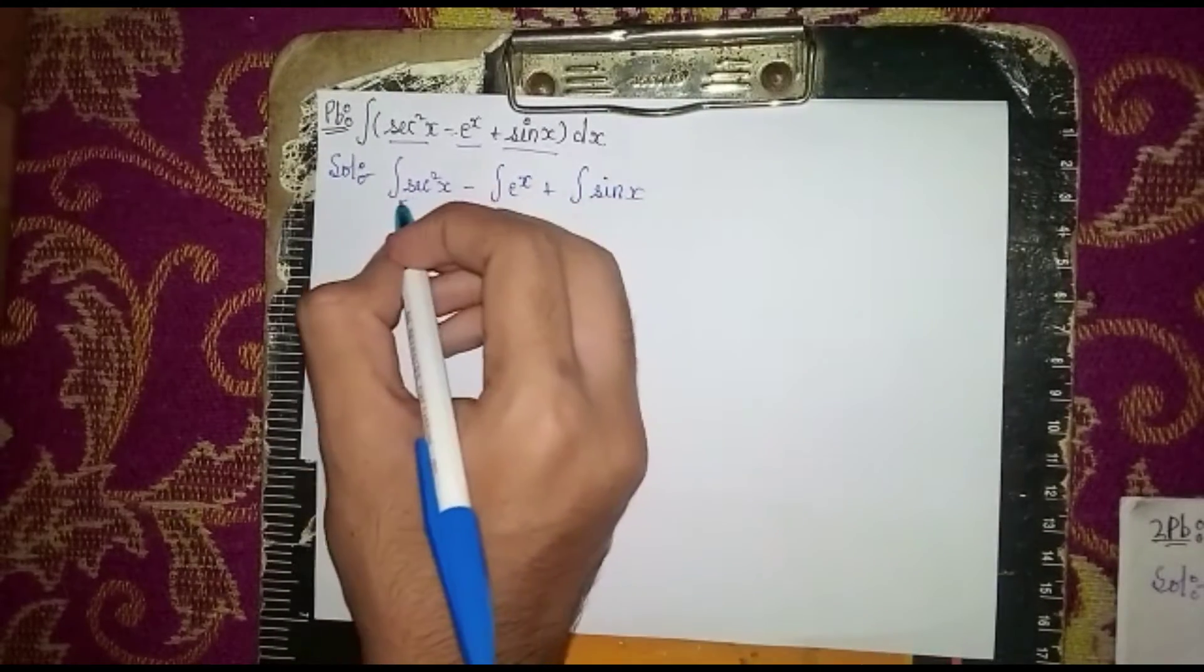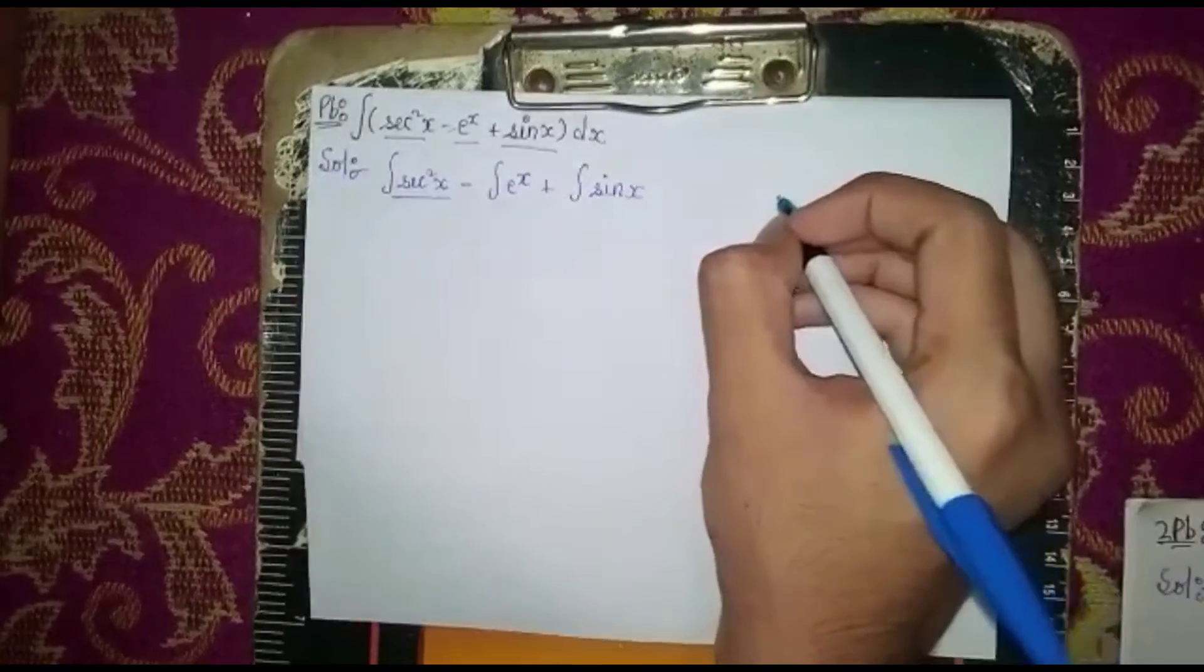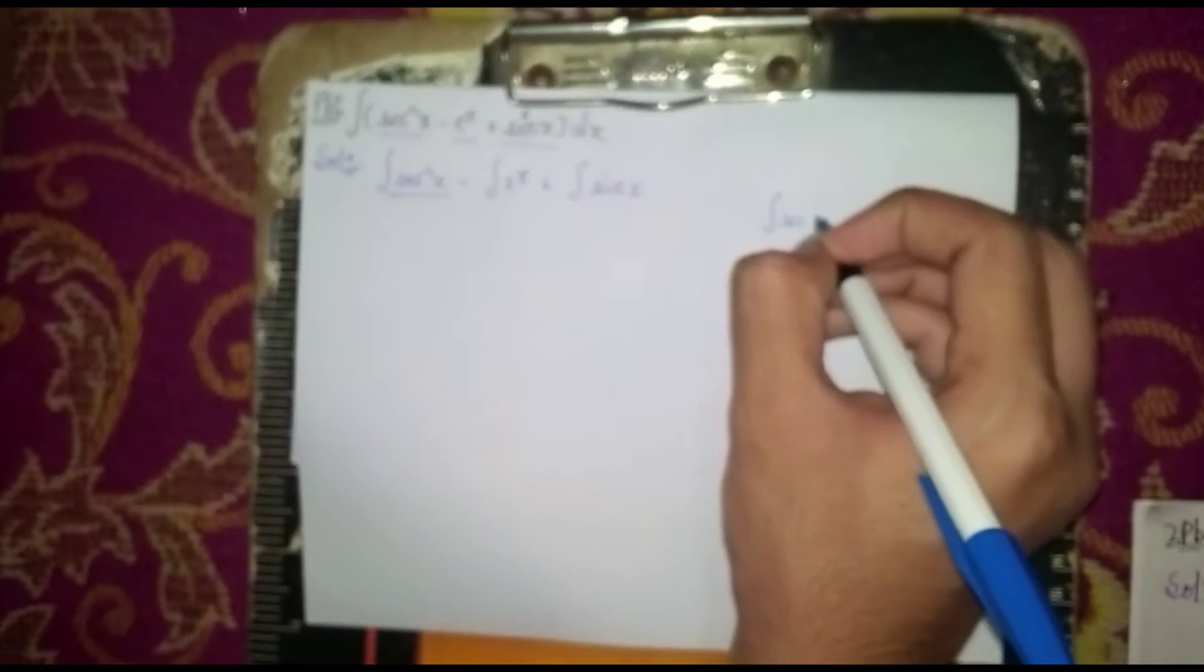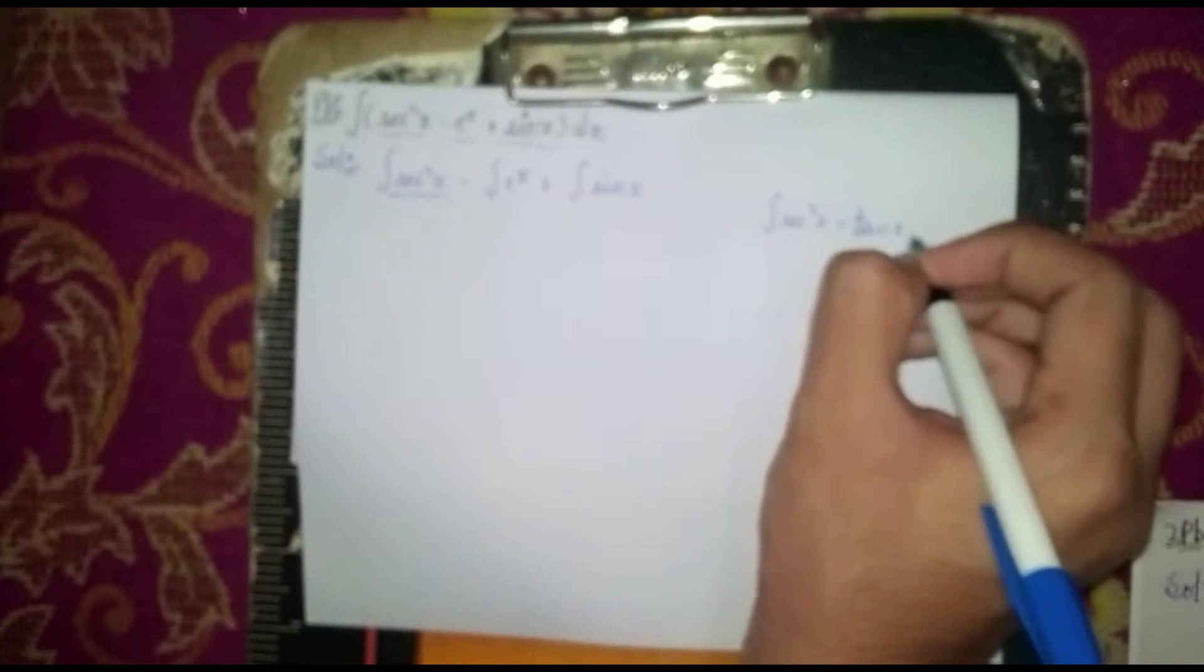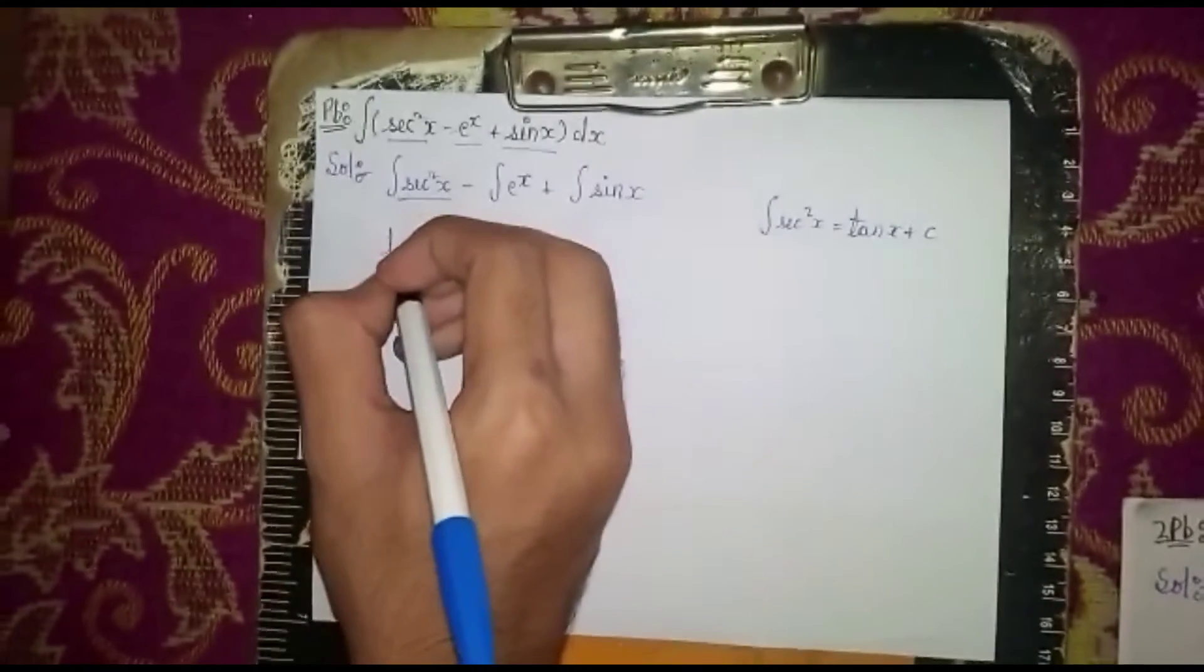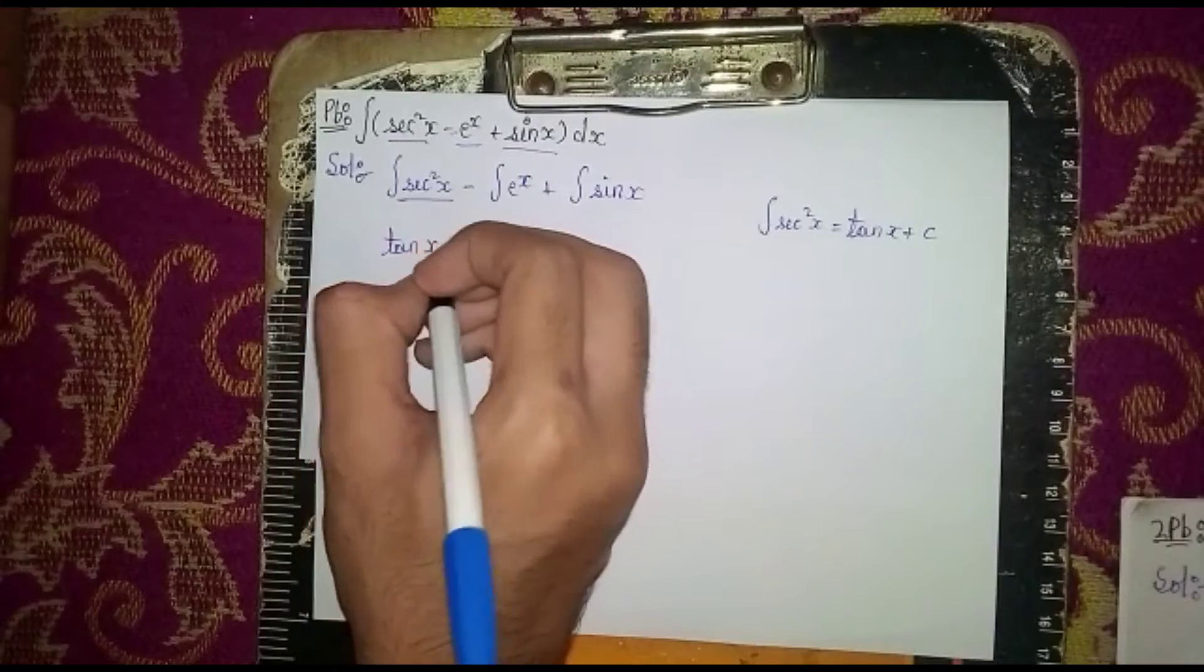Which formula do we use? The integral of sec²x dx is equal to tan x plus c. This formula we use, so it becomes tan x minus...